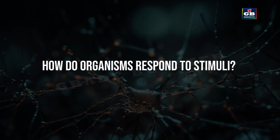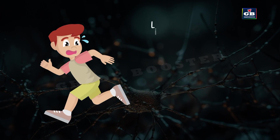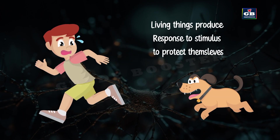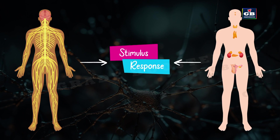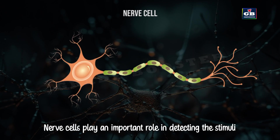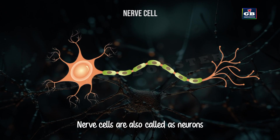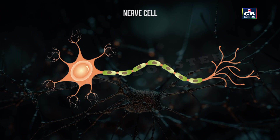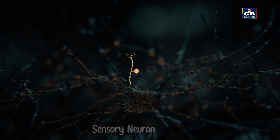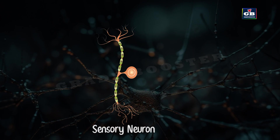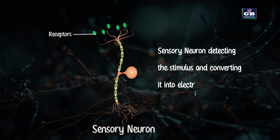How do organisms respond to stimuli? Most responses protect the organism from danger. The nervous system and hormonal system help in giving responses. Nerve cells, also called neurons, detect stimuli and carry messages. Each neuron has parts like the cell body, nucleus, dendrites, axon and nerve endings. They detect stimuli and convert them into electrical signals.